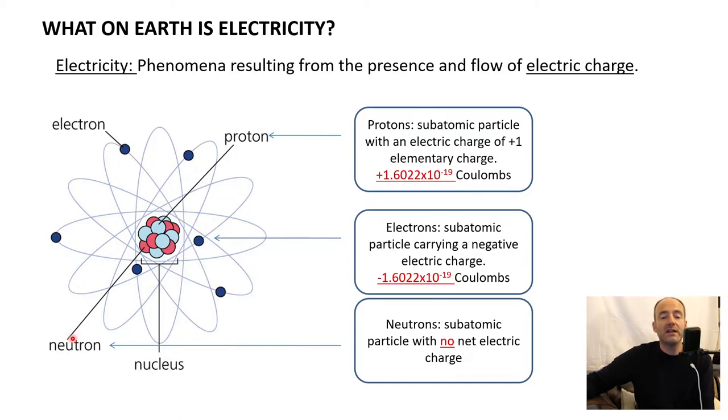Electricity is the phenomena resulting from the presence and flow of electric charge. Here we've got a simple picture of an atom. We can see in the middle of it, we've got a nucleus which contains protons, positively charged, and neutrons, which have no charge. And surrounding that, or orbiting it, are the electrons. In this series of videos, we're primarily interested in the electrons.